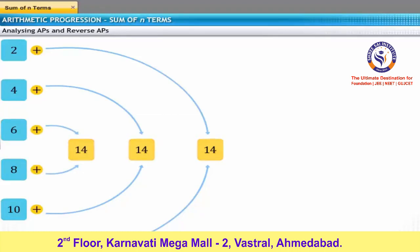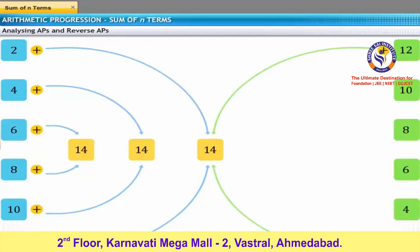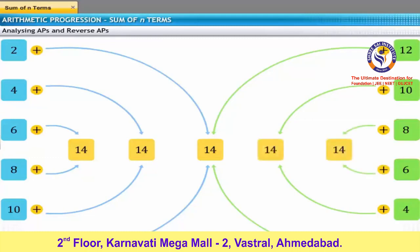This property can be observed in all APs, including reverse APs. For example, if you reverse the given AP, you get 12, 10, 8, 6, 4, 2. Now try adding the first and the last terms of this AP, that is 12 and 2. The sum is 14. Similarly, if you add the second term to the fifth term, and the third term to the fourth term, the sum is 14. This shows a pattern that we can use to derive a formula for the sum of N terms.